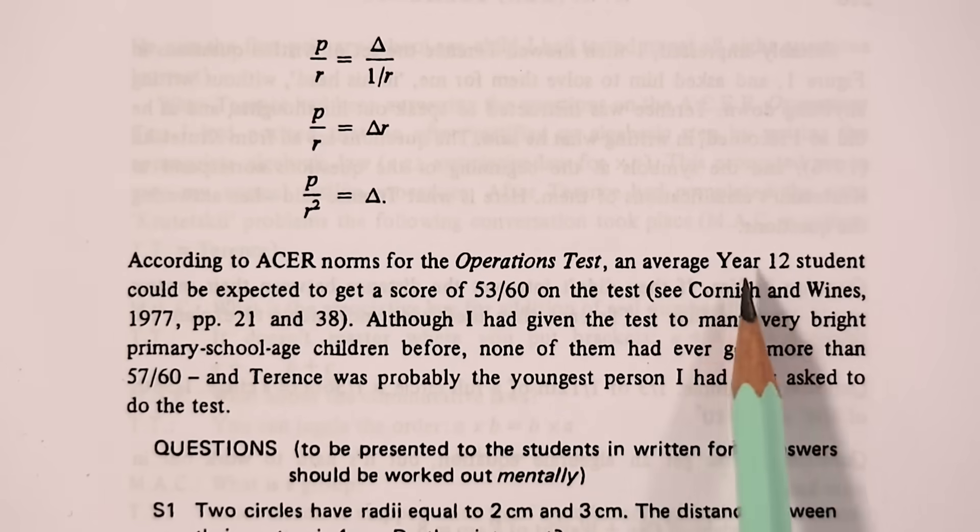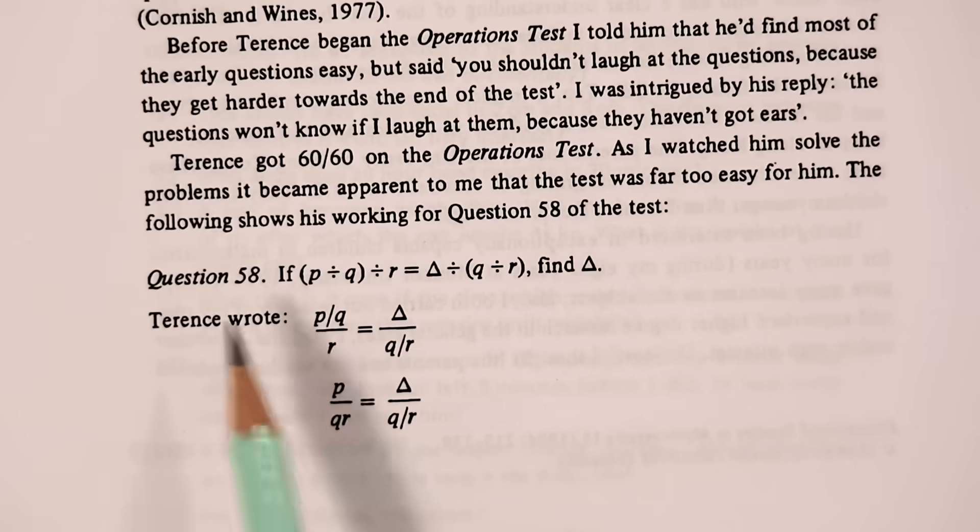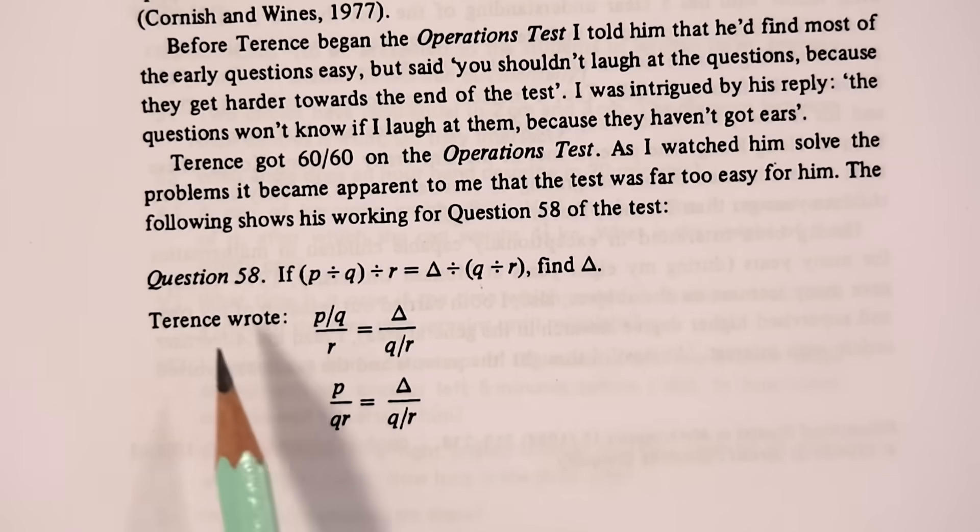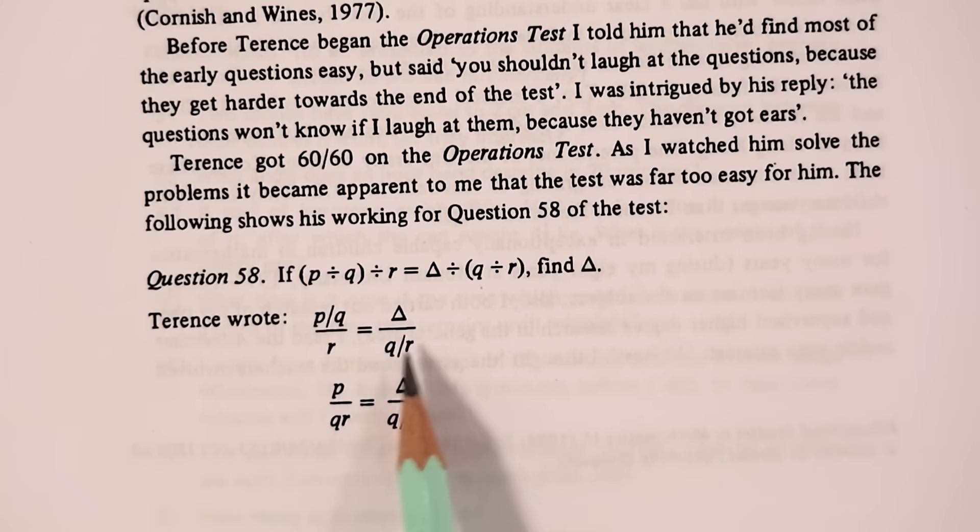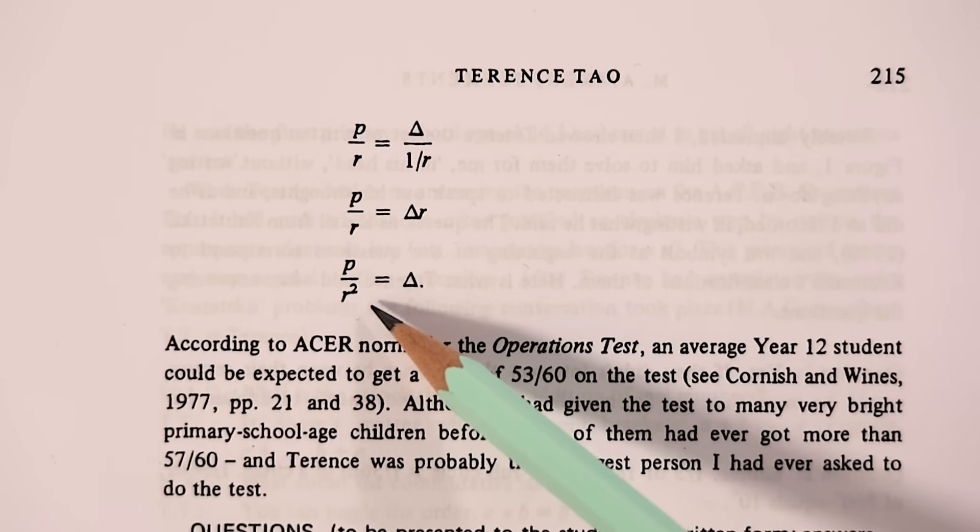He went on to score 60 out of 60 on this test. On average, a year 12 student taking the same test would be expected to get a score of only 53 out of 60. And here's one of those example questions. Question 58 asked, if p divided by q divided by r is equal to delta divided by q divided by r, then find delta. And here is seven year old Terence's answer. He writes it out as a fraction, and then just does a bit of algebra to rearrange for delta, getting it to be p over r squared.